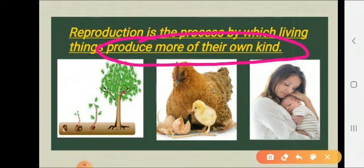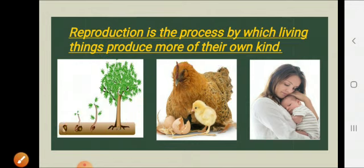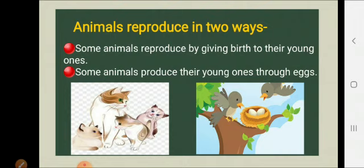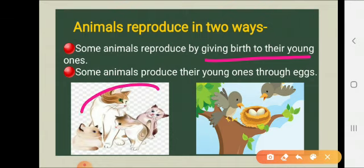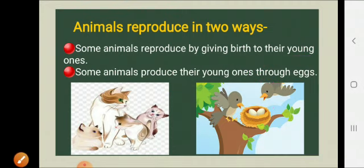Plants produce seeds which grow into a new plant. Similarly, female animals and human beings give birth to young ones. Animals reproduce in two ways: number one, some animals reproduce by giving birth to their young ones, like cats; and number two, some animals produce their young ones through eggs, like birds.